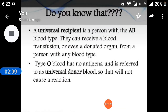A universal recipient is a person with the AB blood group — they can receive blood transfusions or even donated organs from a person with any blood type. Type O blood has no antigens and is referred to as universal donor blood, so it will not cause a reaction.